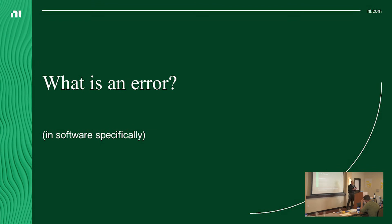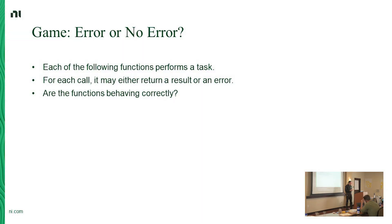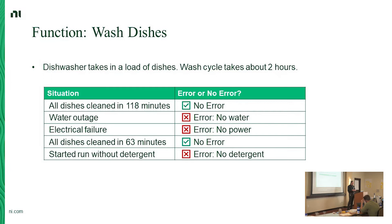We're going to play a game: what is an error? I'll show functions that return either output or an error, and you tell me if they're doing the right thing. Function 'wash dishes' takes a load of dishes and returns clean dishes; the wash cycle takes about two hours. Case 1: all dishes cleaned in 118 minutes, returns no error — seems reasonable. Case 2: water outage mid-run, returns error 'no water' — obviously couldn't complete the task. Case 3: electrical failure, no power, didn't get dishes washed.